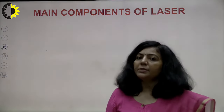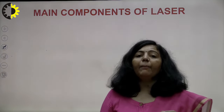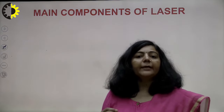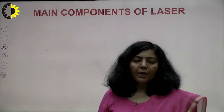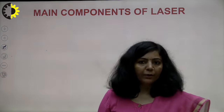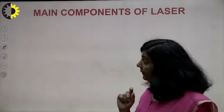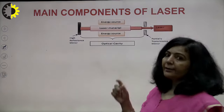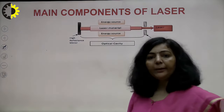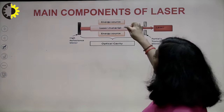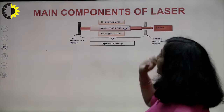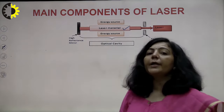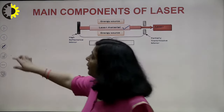Any laser system works with the help of three essential components. Without these three essential requirements, a laser cannot work. The first component — as shown in the block diagram for main components of a laser system — is known as laser material, also known as the active medium of a laser system.